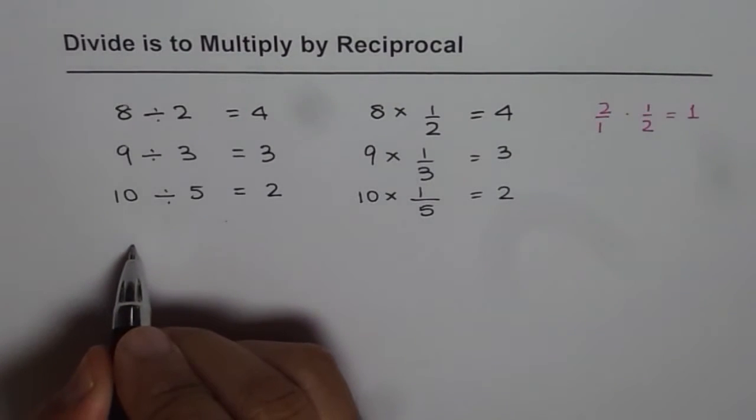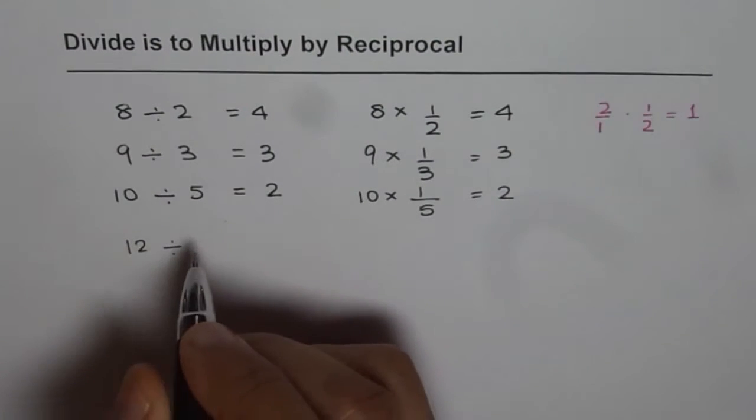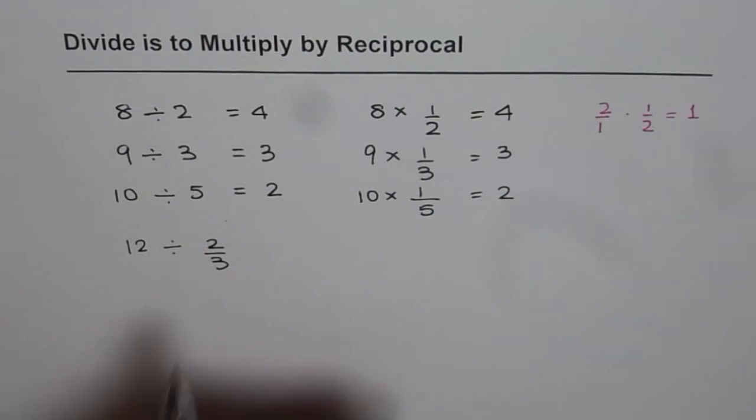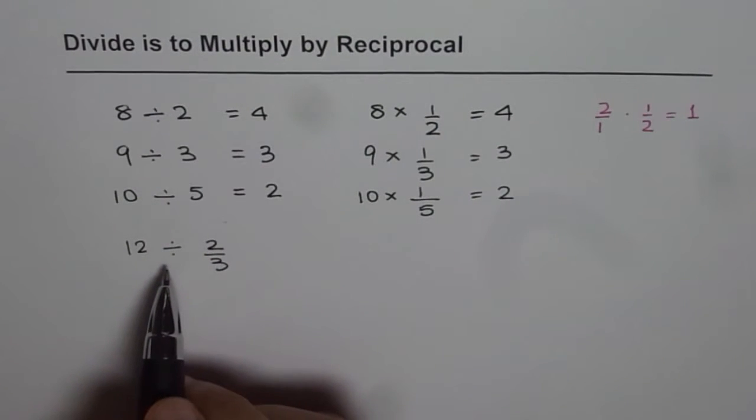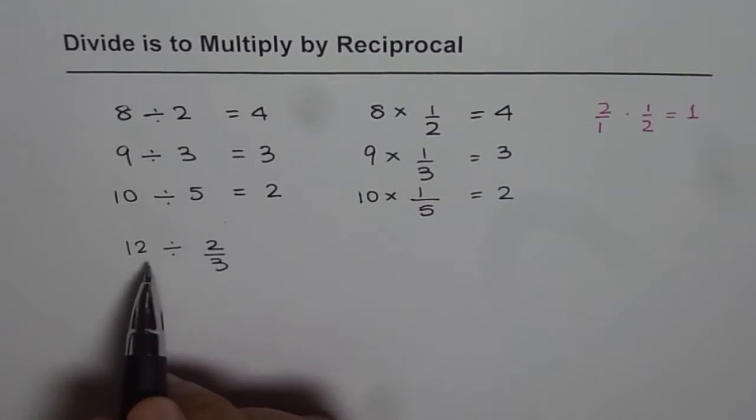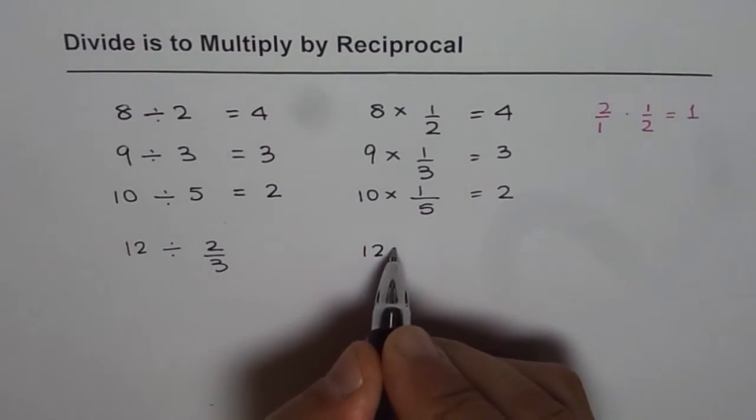Let us explore. If I do 12 divided by 2 over 3, what do we get? Now we know that dividing is same as multiplying by reciprocal. So first, let us do multiplication by reciprocal. So we will do 12 times.